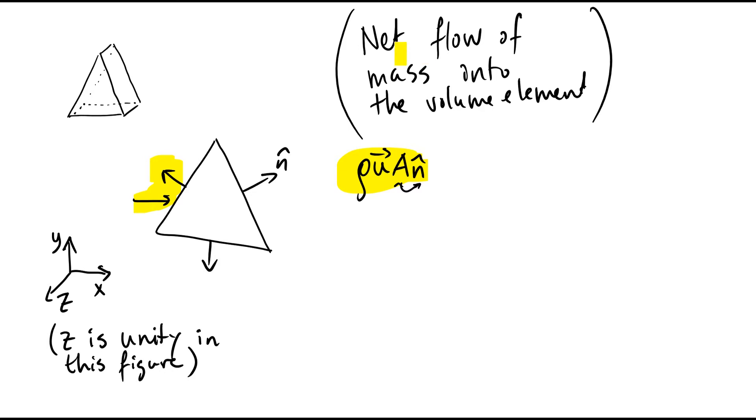But we're interested in the net flow of mass into the volume element, and that should correspond to the accumulation of mass in the volume element, which is a positive quantity. Therefore, a negative sign would indicate an inflow into the volume element, while a positive sign would indicate an outflow.